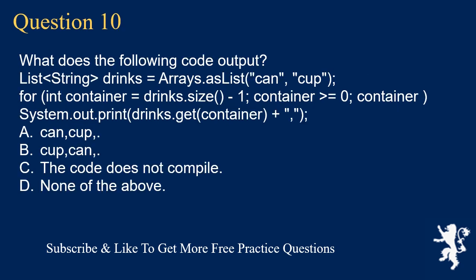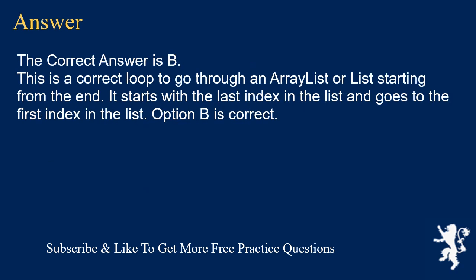Question 10. What is the following code output? List<String> drinks = Arrays.asList("can", "cup"); for (int container = drinks.size() - 1; container >= 0; container--) { System.out.print(drinks.get(container) + " "); } A. can cup. B. cup can. C. The code does not compile. D. None of the above. The correct answer is B. This is a correct loop to go through a list starting from the end. It starts with the last index and goes to the first index. Option B is correct.